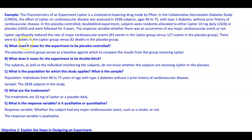There were 61 deaths in the Lipitor group versus 82 deaths in the placebo group. Part A: what does it mean for the experiment to be placebo-controlled? The placebo-controlled group serves as a baseline against which to compare the results from the group receiving Lipitor. Part B: what does it mean for the experiment to be double-blind? The subjects, as well as the individual monitoring the subjects, do not know whether the subjects are receiving Lipitor or the placebo.